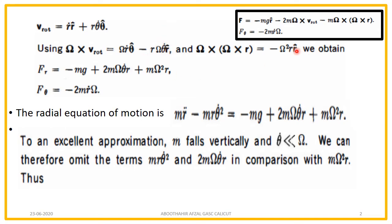The third term, m times omega cross (omega cross r), gives minus omega-squared times r times r-cap. The two minus signs become plus, giving plus m times omega-squared times r. Similarly, the component of force along the theta direction is minus 2m times r-dot times omega, because this is the only component along theta. From these two expressions for f_r and f_theta, we proceed to the next part of the derivation.